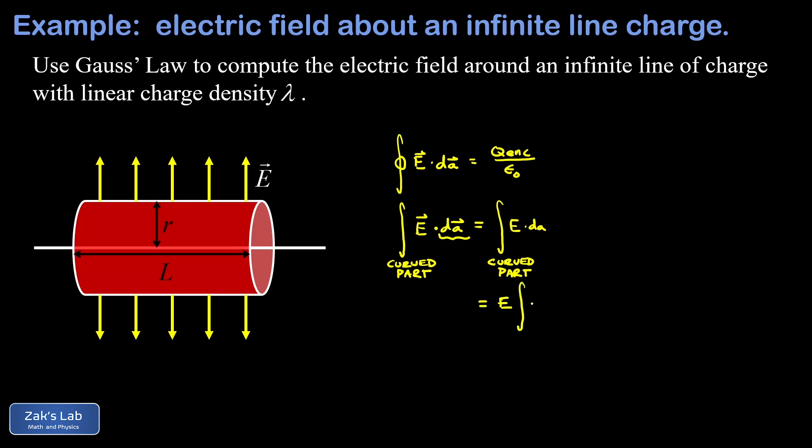And I end up with e times the integral of dA where I'm taking that area integral over only the curved part of the cylinder. So what's the area of the curved part of the cylinder? That's just the circumference times the length. So we end up with e times 2πrL.